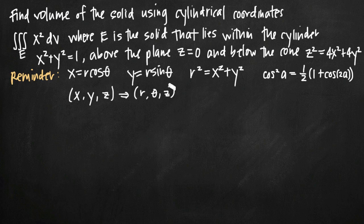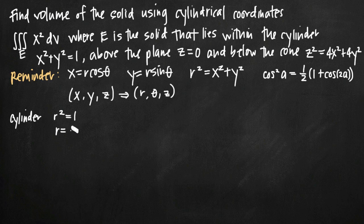We're going to attack this problem by first converting the three functions from Cartesian to cylindrical coordinates. For example, the solid lies within the cylinder x squared plus y squared equals 1. We know that r squared equals x squared plus y squared, so we substitute r squared here. We get r squared equals 1, and taking the square root of both sides, r equals 1. We only use positive 1 because we're talking about a physical radius, so the cylinder in cylindrical coordinates is simply r equals 1.